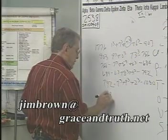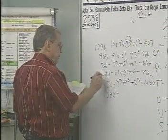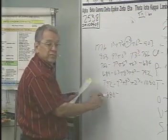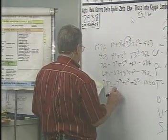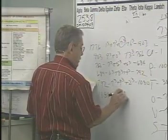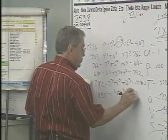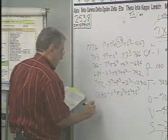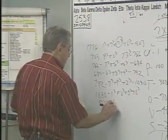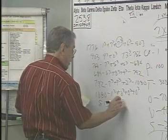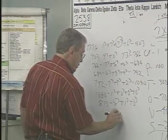Then you take 1,080. How many times are we going to do this? We're going to do it 7 times. 1,080 is 1 to the third power plus 0 to the third power plus 8 to the third power plus 0 to the third power, and that gives you 513. And then 5 to the third power plus 1 to the third power plus 3 to the third power gives you 1,050.